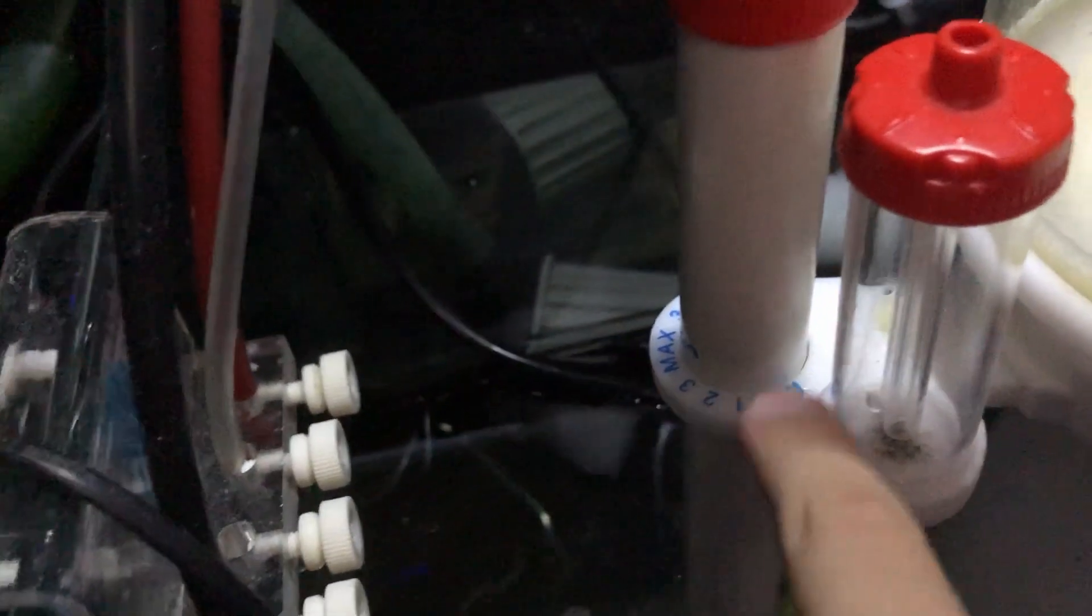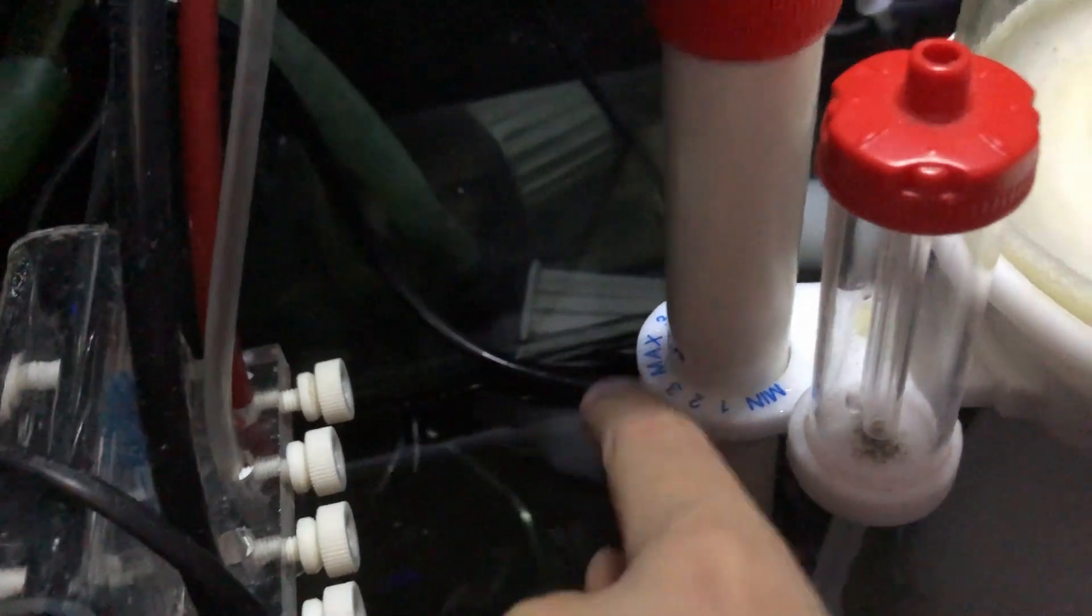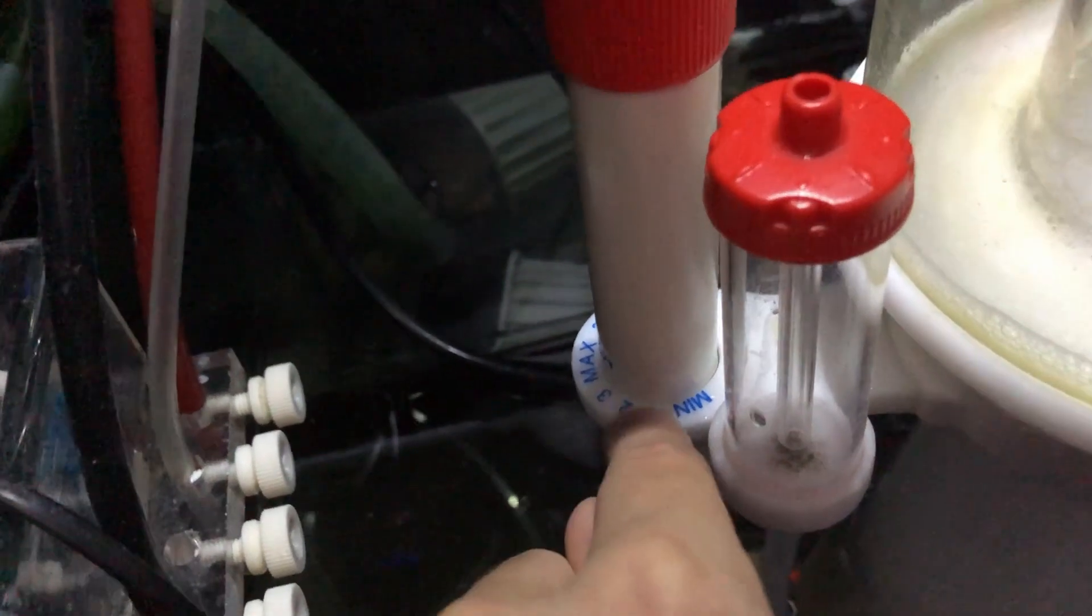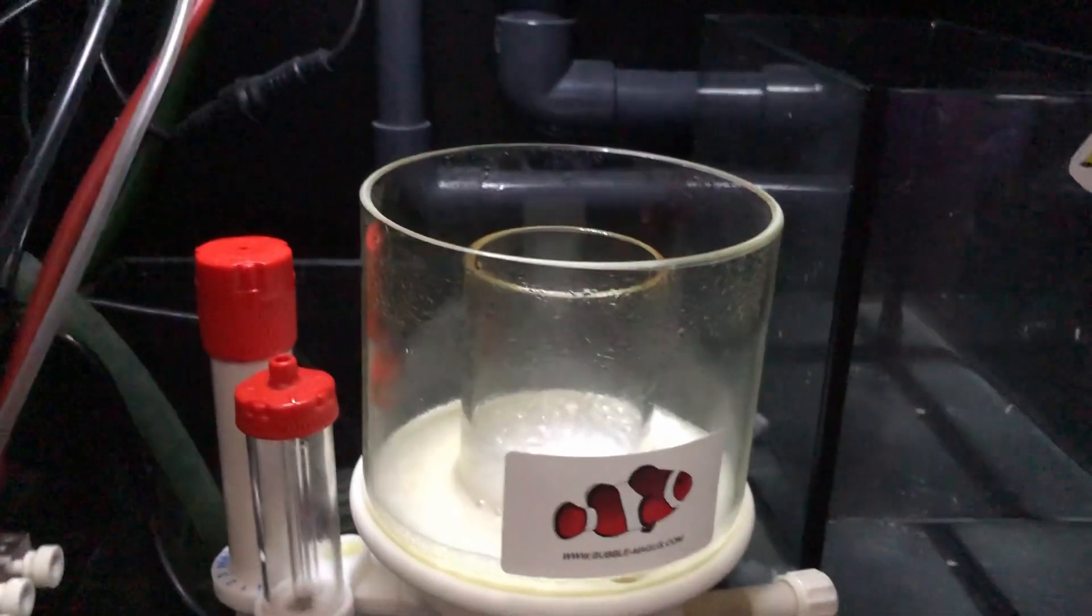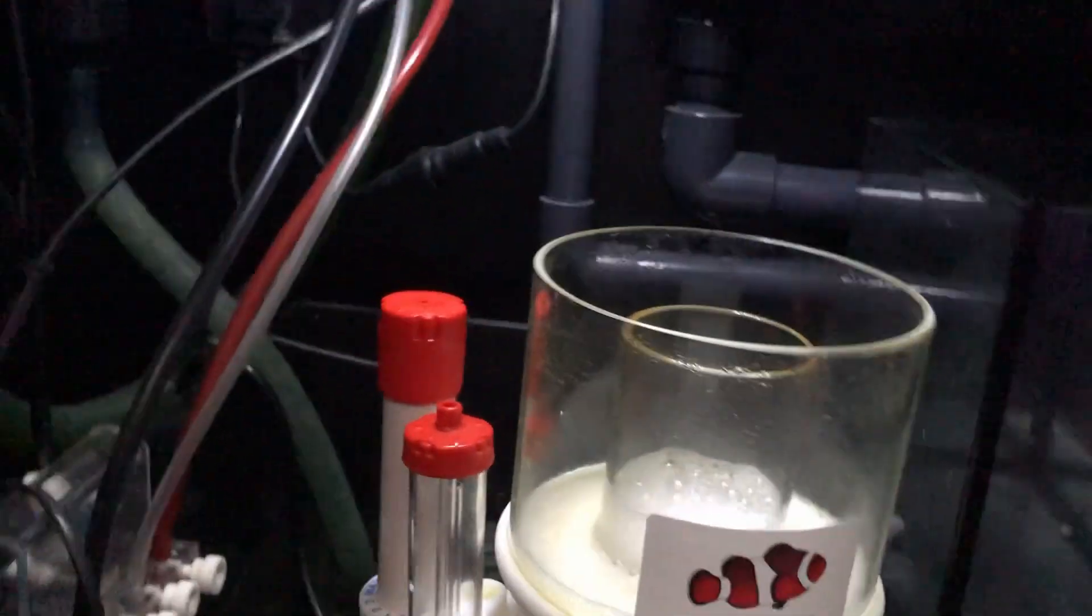You can see minimum and maximum, and that blue dot is pointing more closer to maximum. You've got the one, two, three in the middle, so you know where your tank's sweet spot is. Every tank is different.